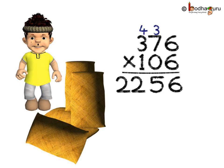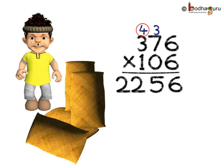We start with 6, so we will multiply 376 by 6. 6 sixes are 36 — write 6 and 3 is the carry forward. Next, 6 sevens are 42; add 3 carry over, so 45. Next, 6 threes are 18; add 4 carry over, so 18 plus 4 is 22.